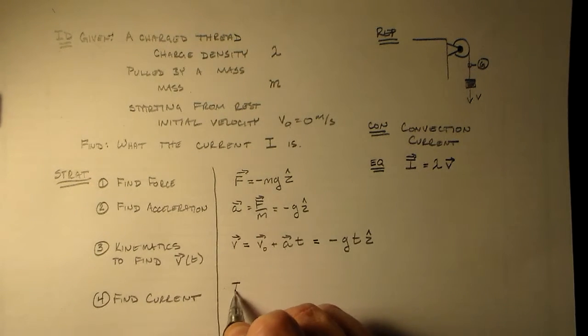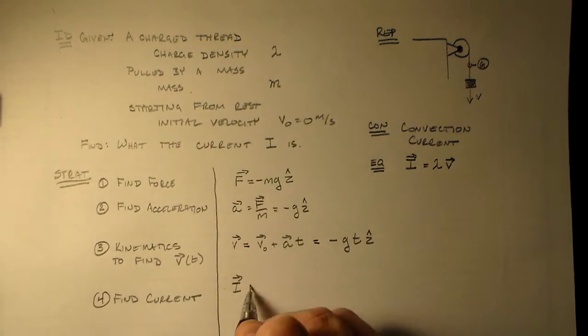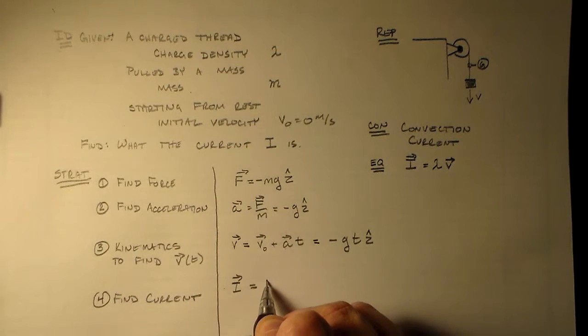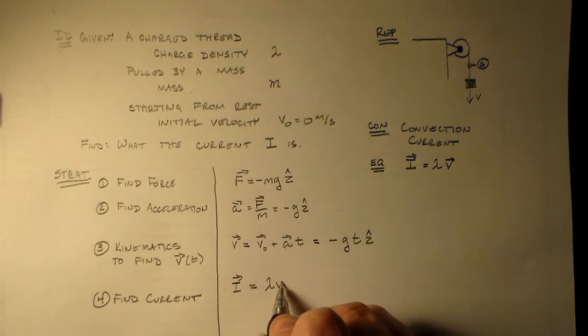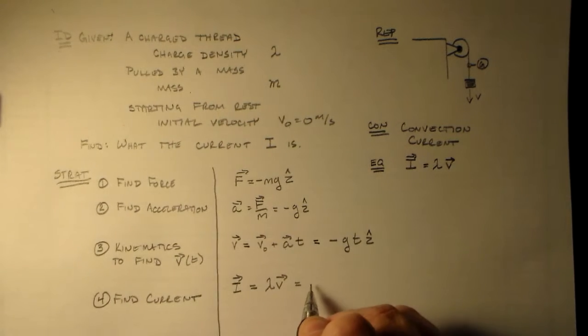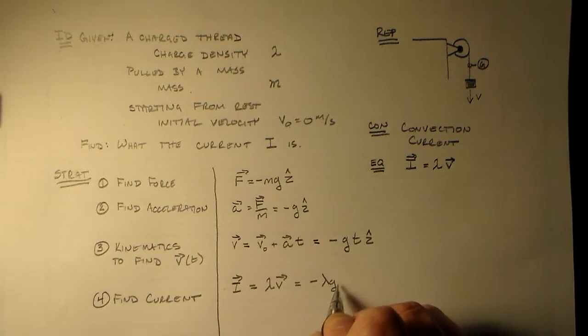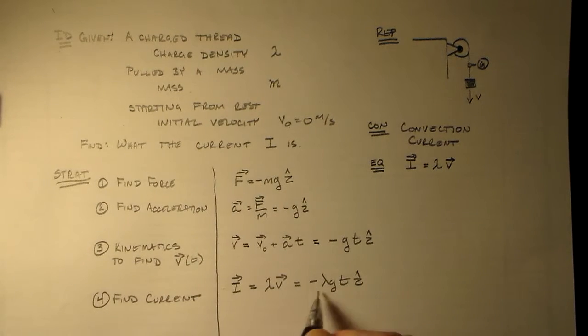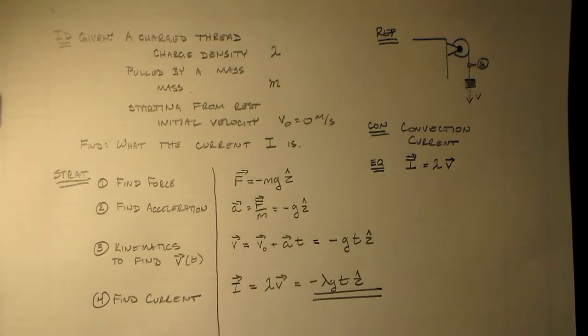And now to find our current, we just use this equation for the convection current here, which is lambda times this velocity, which is going to be minus lambda gt in the z-hat direction. Very, very direct, all we really need to do.